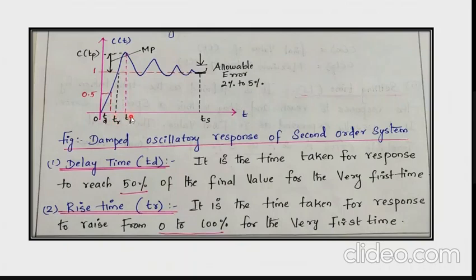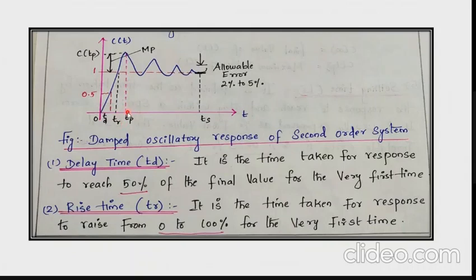Next comes peak time, which is Tp. Tp is the time taken by the response to reach the maximum peak. The time period measured at the maximum peak is called the peak time.